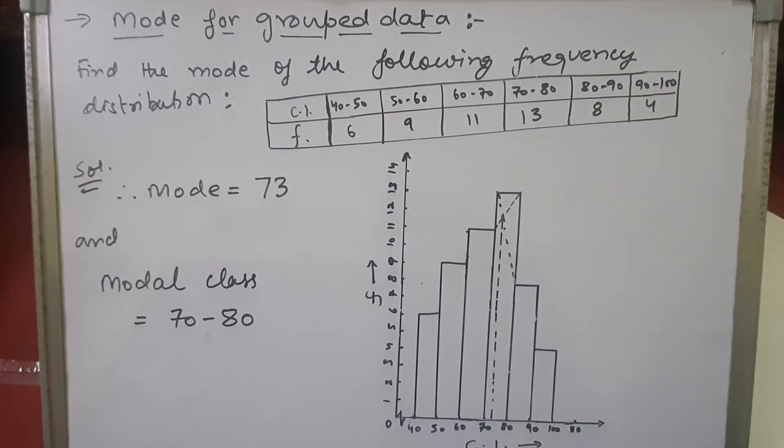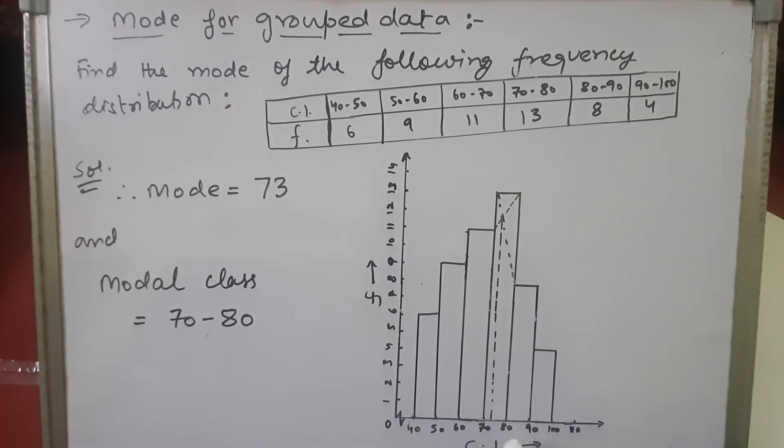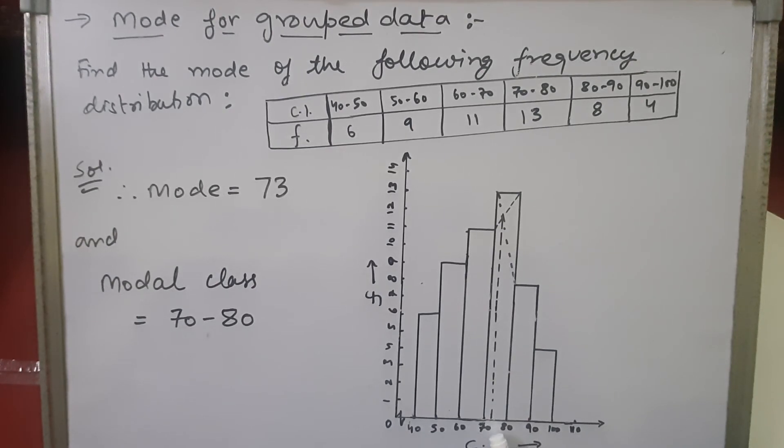When we drop a perpendicular, we can see here 70-something value is coming. So I've approximately assumed it at 73. We can say that the mode is 73 approximately.